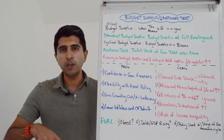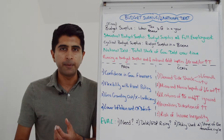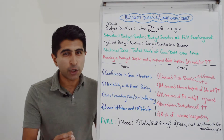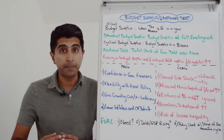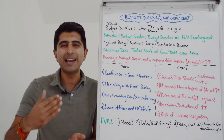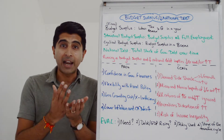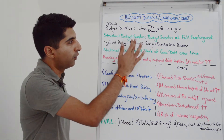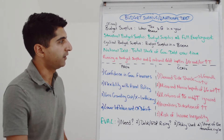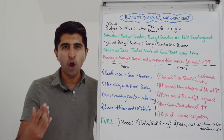A budget surplus occurs when tax revenue is greater than government spending in a year. A structural budget surplus is a budget surplus being run at full employment, whereas a cyclical budget surplus is a budget surplus in a boom. In a boom, we expect there to be a budget surplus or at least an improvement in government finances given lower government spending on benefits and higher tax revenues. The national debt is the total stock of government debt over time.